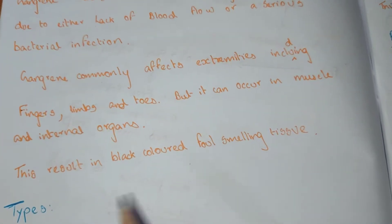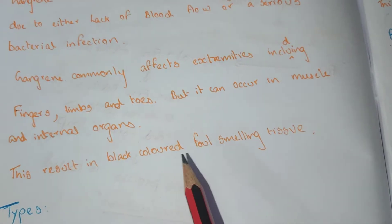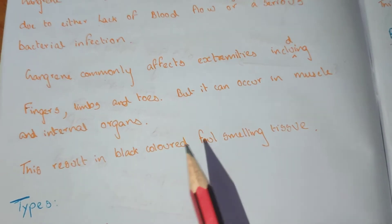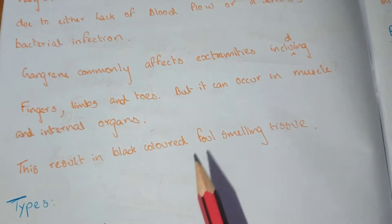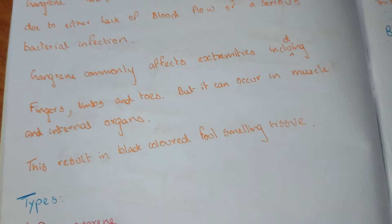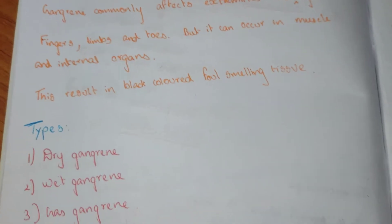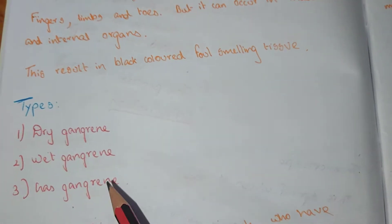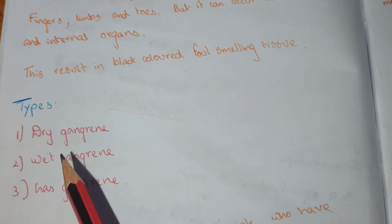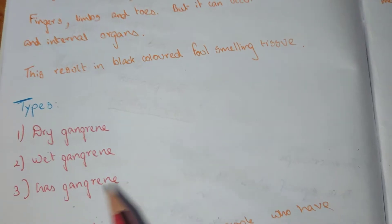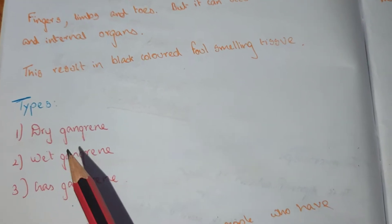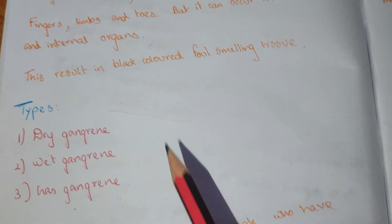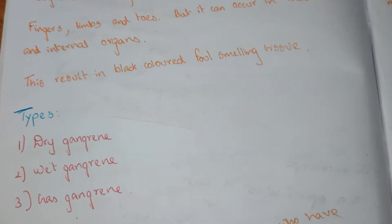There are three types of gangrene: dry gangrene, wet gangrene, and gas gangrene. Gas gangrene is actually a type of wet gangrene.